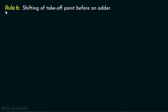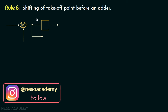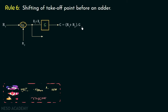Rule number 6 of block diagram reduction is regarding the shifting of a takeoff point before an adder. Consider this block diagram representation in which this is a two-input adder, this is a takeoff point, and this is a block. The inputs of this adder are r1 and r2, and therefore the output of this adder will be r1 plus r2. This block has a gain g, and so the output will be c equal to r1 plus r2 multiplied with g.